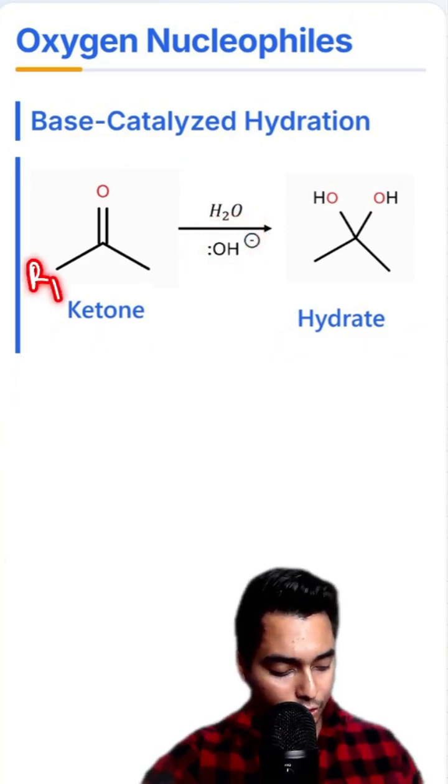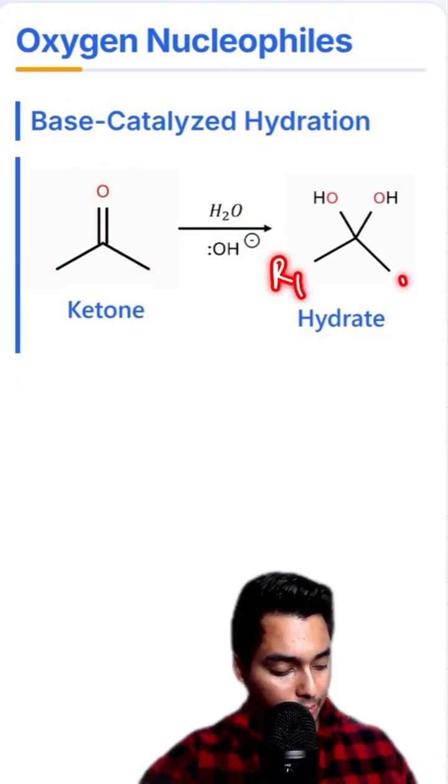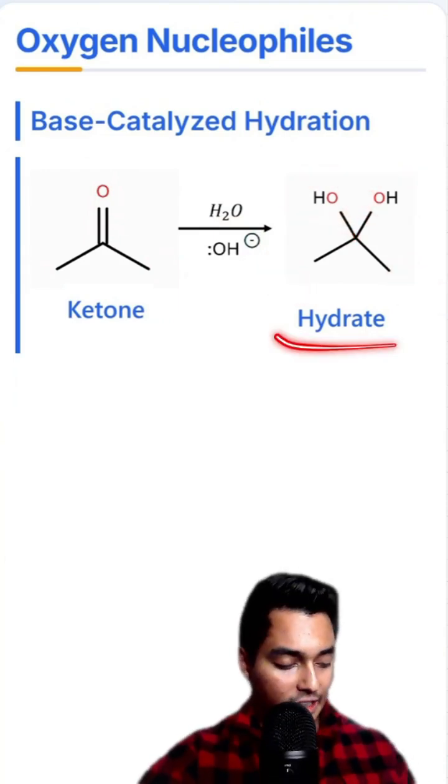Remember, a ketone is an R group bonded to a carbonyl. A hydrate here is going to be R bonded to another carbon, another R group, and two alcohol groups. So this is a hydrate.